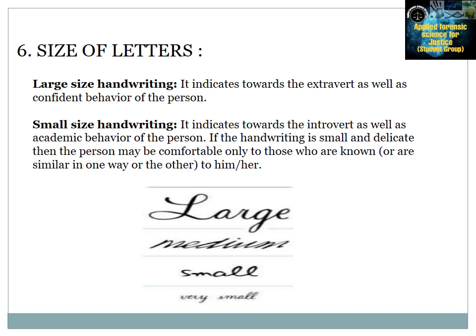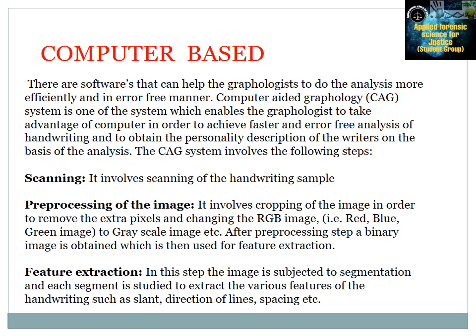The sixth feature is the size of letters. Large handwriting indicates extrovert and confident behavior. If the handwriting is small and delicate, then the person may be comfortable only with those who are known to them or similar to them. In computer-based analysis, software can help the graphologist to do analysis more efficiently and in an error-free manner. A Computer-Aided Graphology (CAG) system enables the graphologist to take advantage of the computer to achieve faster and error-free handwriting analysis and to obtain a personality description of the writer.